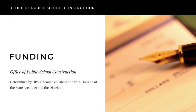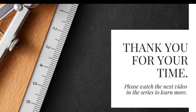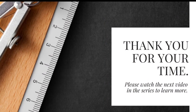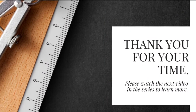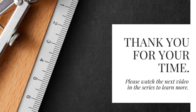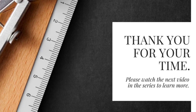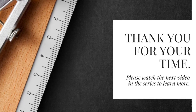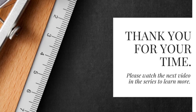After the DSA has confirmed eligibility and approved all phases of your project, the district can then apply for funding from the Office of Public School Construction. This process is evaluated further in the next videos of this series. Thank you for watching this video on the eligibility evaluation process for the Seismic Mitigation Program and the DSA process. Please watch the next videos in this series to learn more.